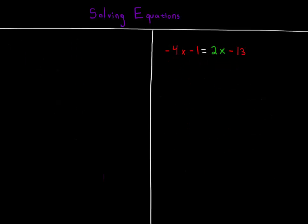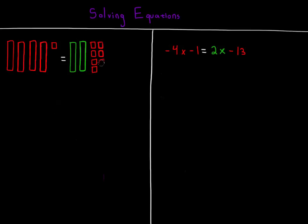Let's do another example. Here we'll solve negative 4x minus 1 equal to 2x minus 13. The left side of the equation is negative 4x minus 1, so we'll draw in 4 red bars and a single red unit. The right-hand side of the equation is positive 2x and negative 13, so we'll draw in 2 green bars and 13 red squares.